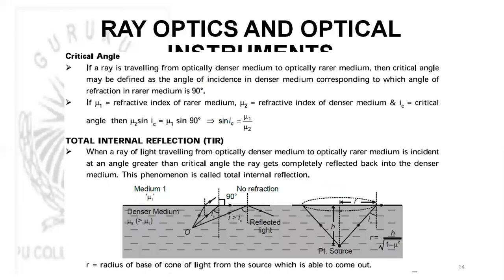Coming to refraction and critical angle, the total internal reflection phenomenon: as the angle of incidence increases, there is one particular angle for which the angle of refraction in the denser medium becomes 90 degrees. The ray must travel from denser to rarer medium. That angle of incidence is called the critical angle, and it depends upon the pair of media. The formula is sin(ic) = mu1/mu2. TIR occurs when the ray travels from denser to rarer medium and the angle of incidence is greater than the critical angle.